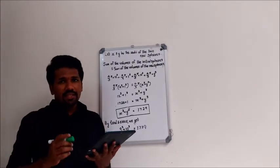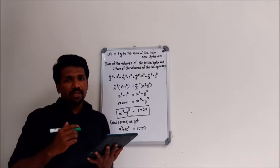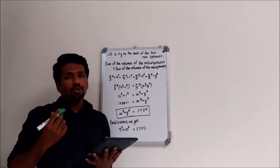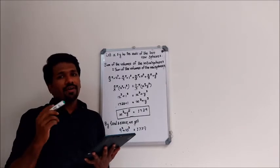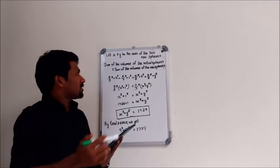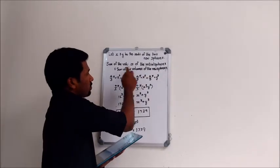The question says that initially there were two spheres with radii 12 cm and 1 cm. They were melted and fused to make two new spheres. The question clearly says there was no loss of iron. That means the sum of volumes of the initial spheres and the sum of the volumes of the new spheres will be the same.